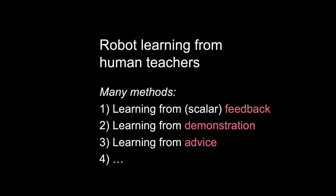There are a number of different ways that robots can learn from human teachers. I'm only going to talk about learning from scalar feedback, but there's also learning from demonstration — often called imitation learning — going by specific forms of behavior cloning or inverse reinforcement learning, learning from advice, and so on.